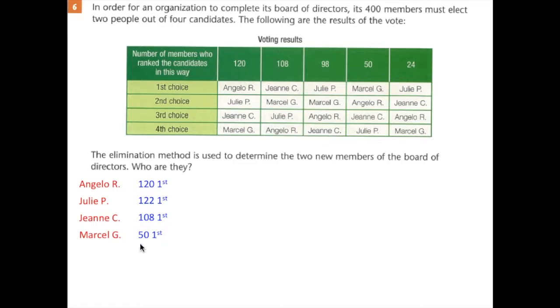We're going to eliminate Marcel because he has the lowest number of firsts. So we remove Marcel everywhere we see him. Cross him out here. And we're going to give his firsts to the next person in line for them, which is Angelo. So Angelo's going to get 170.